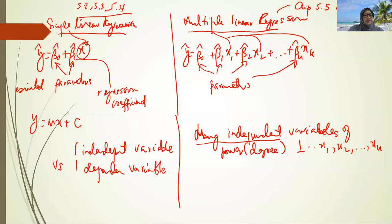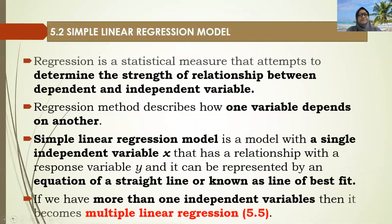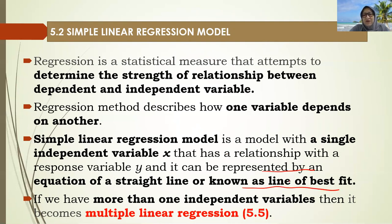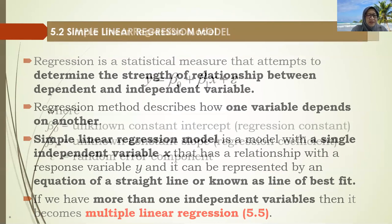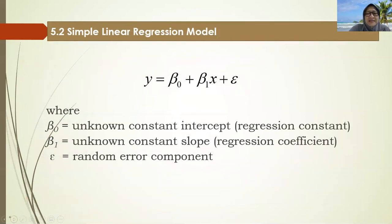Regression is a statistical measure that attempts to determine the strength of the relationship between dependent and independent variables, and it describes how one variable depends on another. A simple linear regression model has a single independent variable related to a response variable y, represented by the equation of a straight line, or the line of best fit. The model is: y equal to beta-naught plus beta-one x plus epsilon, where epsilon is the random error component.